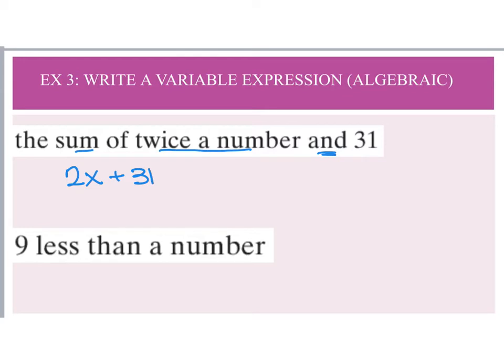The next one is probably the trickiest: 'nine less than a number.' Here I take some number — we'll call it t — and subtract nine, giving t minus nine. The reason it's t minus nine is that if you think of a specific example, like 'what is nine less than 10,' you'd say 10 minus nine. So nine less than a number means t minus nine.